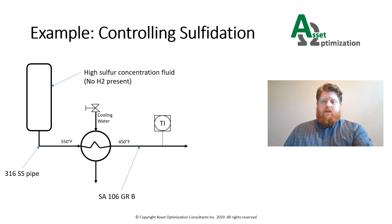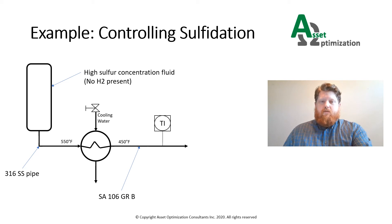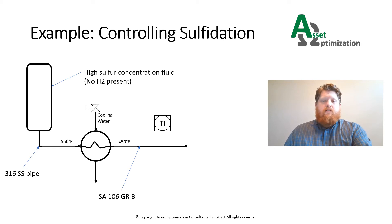Now that we have a basic understanding of IOWs, let's go into a hypothetical example. In this example, we will discuss sulfidation. Let's say there is a vessel where the bottoms have a high concentration of sulfur at around 550 degrees Fahrenheit, with no hydrogen present. From the vessel to the heat exchanger, the pipe is 316 stainless steel, which is less susceptible to sulfidation. After the exchanger, the pipe is carbon steel SA-106 grade B. Carbon steel is more susceptible to sulfidation after 500 degrees Fahrenheit, so the IOW will involve controlling the temperature on the outlet side of the heat exchanger.